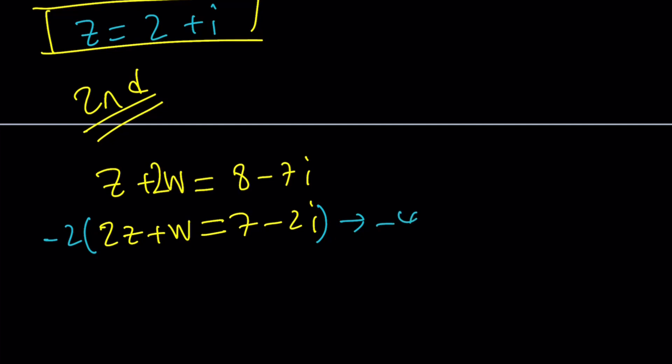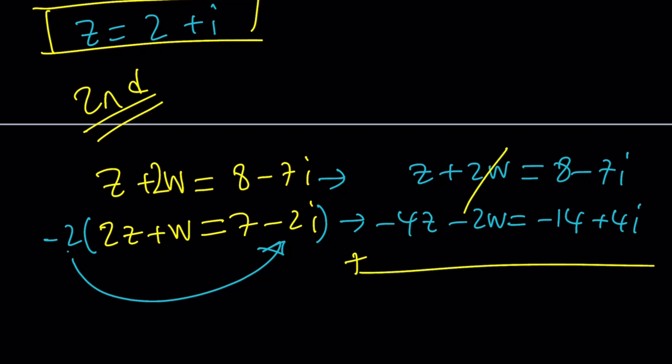That gives us negative 4z minus 2w equals negative 14 plus 4i. I just want to say something here. When I was in high school, when we were solving systems of equations, I always forgot to multiply by the constant. Like, when you distribute the negative 2 here, I wouldn't. And then, I would get it wrong. Anyways, just wanted to share with you a little anecdote. And, this is my new system. After the changes, w is going to cancel out.